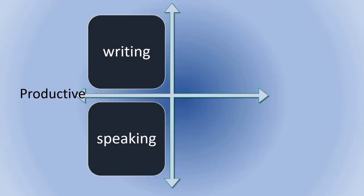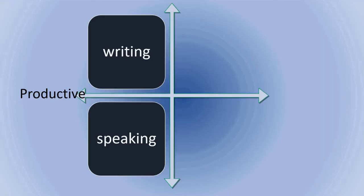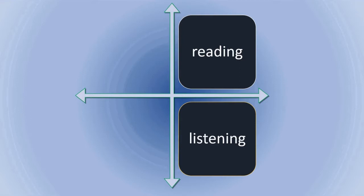But let's divide these four into two columns. On one side you have writing and speaking — speaking and writing are the productive modes of language, and those are the two that I'm concentrating on in this course. On the other column: reading and listening, which are the receptive modes of language.